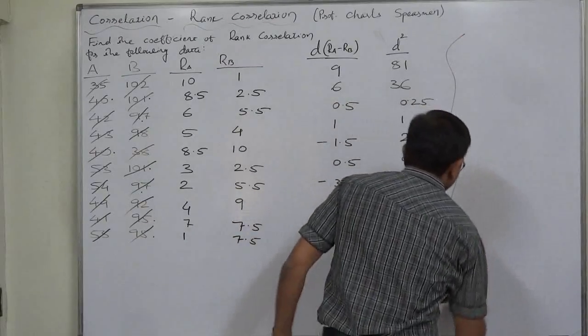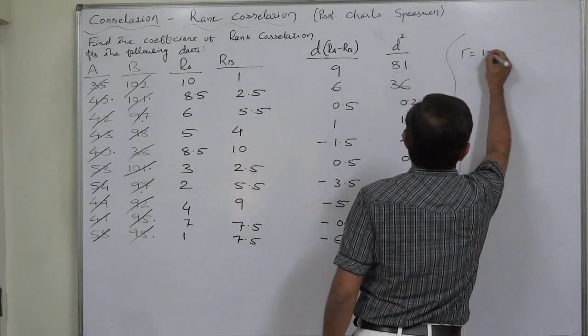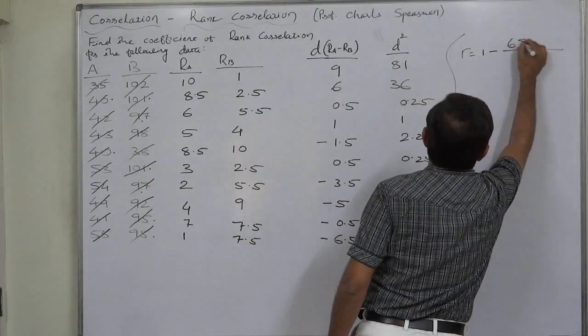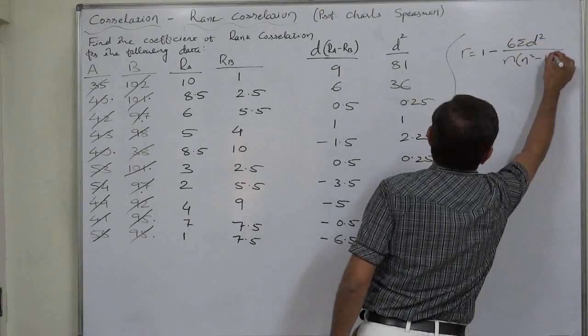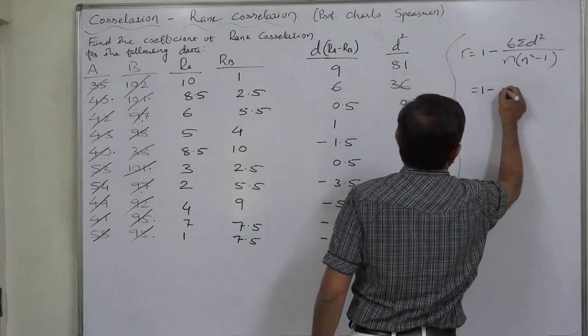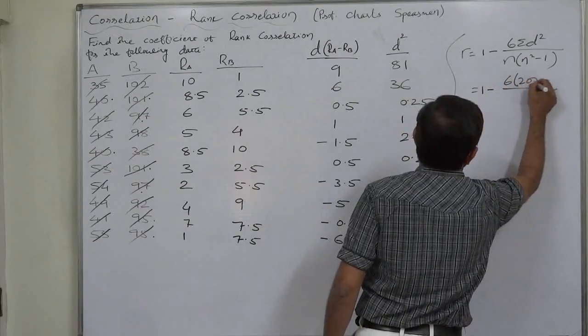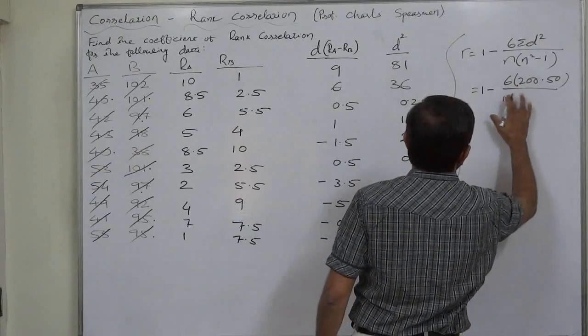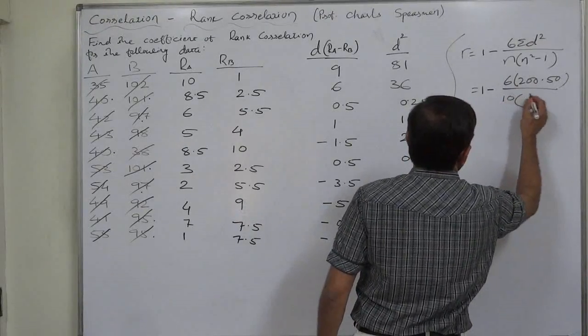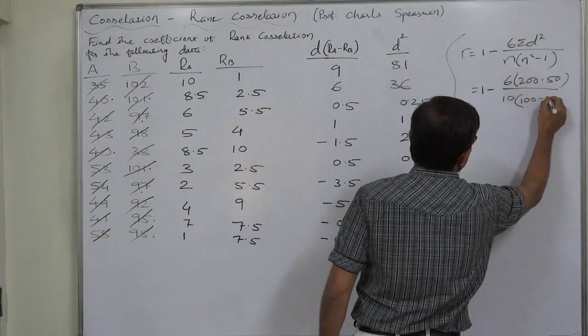Now, the coefficient of rank correlation is 1 minus 6 sigma D square upon n into n square minus 1. So it is 1 minus 6 into 200.5 upon, sorry not 13. In this case, it is 10 only. 10 into 10 square, 100 minus 1.